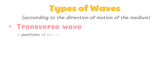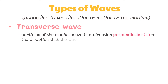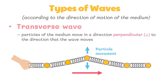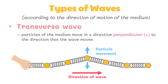A transverse wave is a wave in which particles of the medium move in a direction perpendicular to the direction that the wave moves. Suppose that a slinky is stretched out horizontally across the classroom and a pulse is introduced on the left end by vibrating the first coil up and down. Energy will begin to be transported through the slinky from left to right. As the energy is transported, the individual coils of the medium will be displaced upwards and downwards. In this case, the particles of the medium move perpendicular to the direction that the pulse moves. Transverse waves are always characterized by particle motion being perpendicular to wave motion.